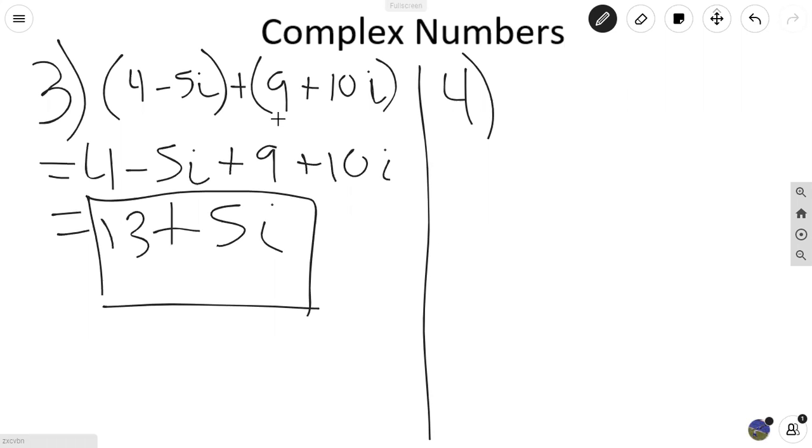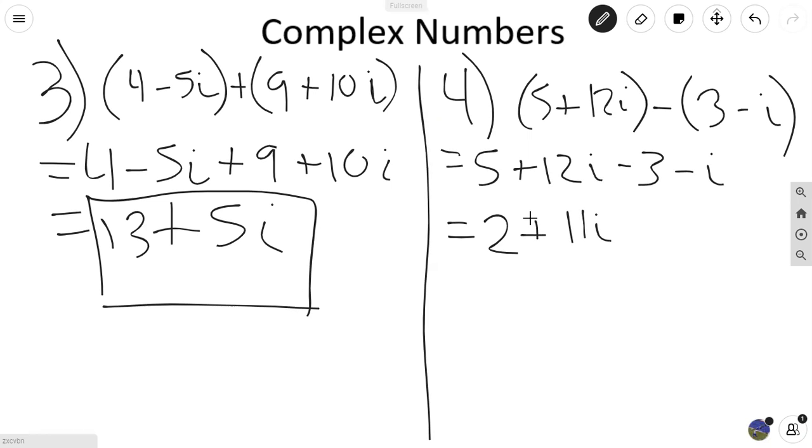Now we'll be doing our last example, which is for subtracting complex numbers. So the equation that we're dealing with is 5 plus 12i minus 3 minus i. Let's just break up the equation now and solve it. So we have 5 plus 12i minus 3 minus i. So 5 minus 3 is going to equal to 2. And then 12i minus i is going to give us 11i. So our final answer is 2 plus 11i.